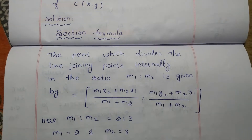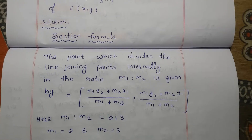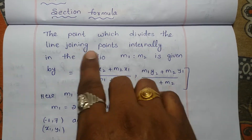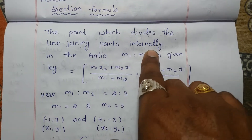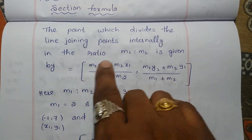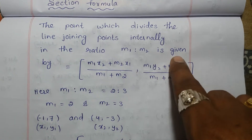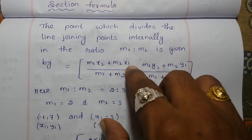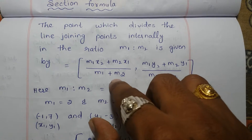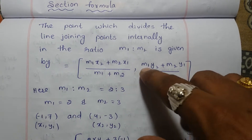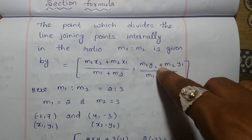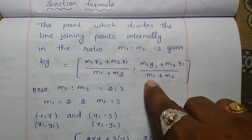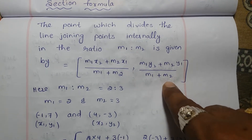So we are using the section formula. The point which divides the line joining points internally in the ratio m1 is to m2 is given by: m1·x2 + m2·x1 divided by m1 + m2, comma, m1·y2 + m2·y1 divided by m1 + m2.